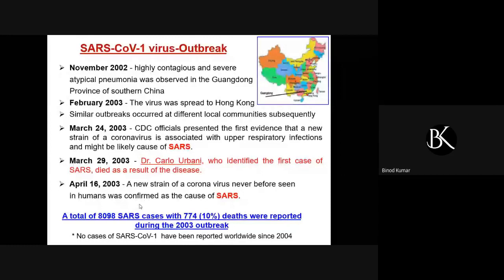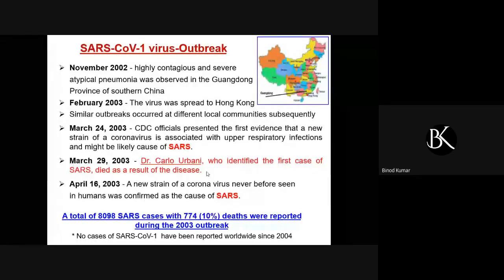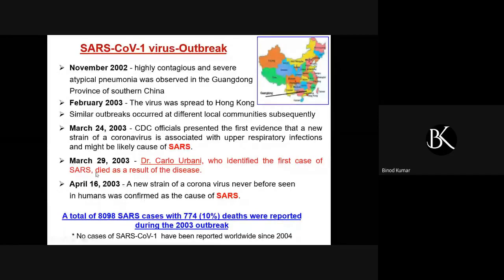On March 29th, Dr. Carlo Urbani, who was the first person to identify the first case of SARS, died as a result of the disease — similar to what we have seen in SARS-2, where doctors who first identified it are now dead. Before we properly understand the virus, before we know how to manage it and control the immune response, it's too late for some people and they die because of several disease conditions.